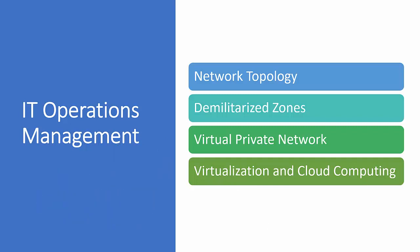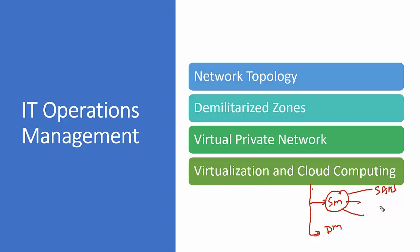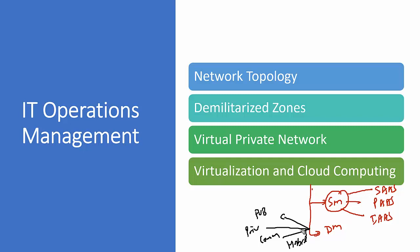Cloud computing means everything is hosted on the cloud and you can access services from anywhere. In a cloud, we have two important things: the service model and the deployment model. For service models, we have three types: SaaS (Software as a Service), PaaS (Platform as a Service), and IaaS (Infrastructure as a Service). For deployment models, we have four types: public cloud, private cloud, community cloud, and hybrid cloud.